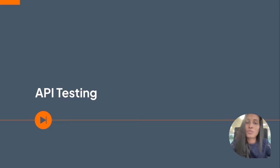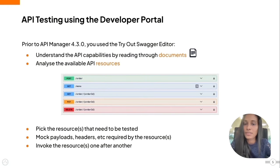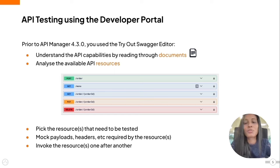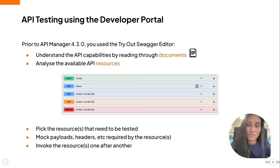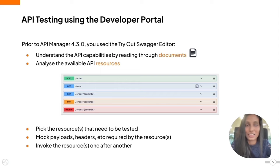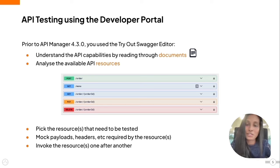First, we're going to focus on the topic API testing. To talk about API testing using the developer portal, prior to API Manager 4.3.0, you had to go through the documentation that was available to understand the API's capabilities, and then you had to analyze the available API resources. So you had to go through each of those resources, figure out the payloads, the query parameters, the headers that were needed. Based on those requirements, you had to mock them, and then only you got the option to invoke them and see what the API was capable of.